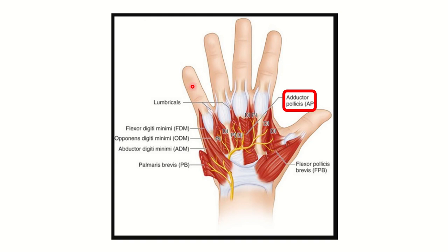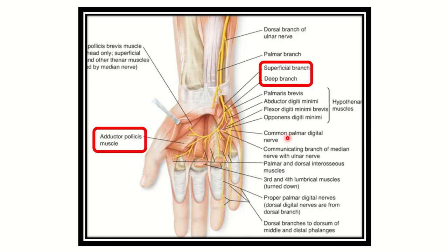Here we can see a nerve coming in on the ulnar side — the little finger side, or ulnar side. It passes through here and finally reaches the adductor pollicis. This nerve supplies the adductor pollicis muscle, so a lesion of this nerve causes loss of adduction of the thumb.